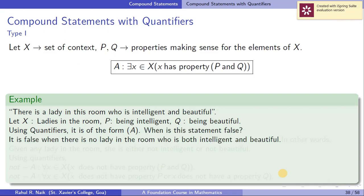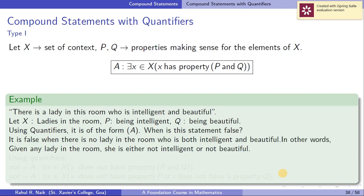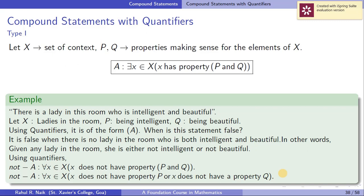How do we write the negation using quantifiers? Not of A: for every x in X, x does not have the property P and Q. The negation of 'x has property P and Q' is 'x does not have property P or x does not have property Q.' So not of A: for every x in X, x does not have property P or x does not have property Q.